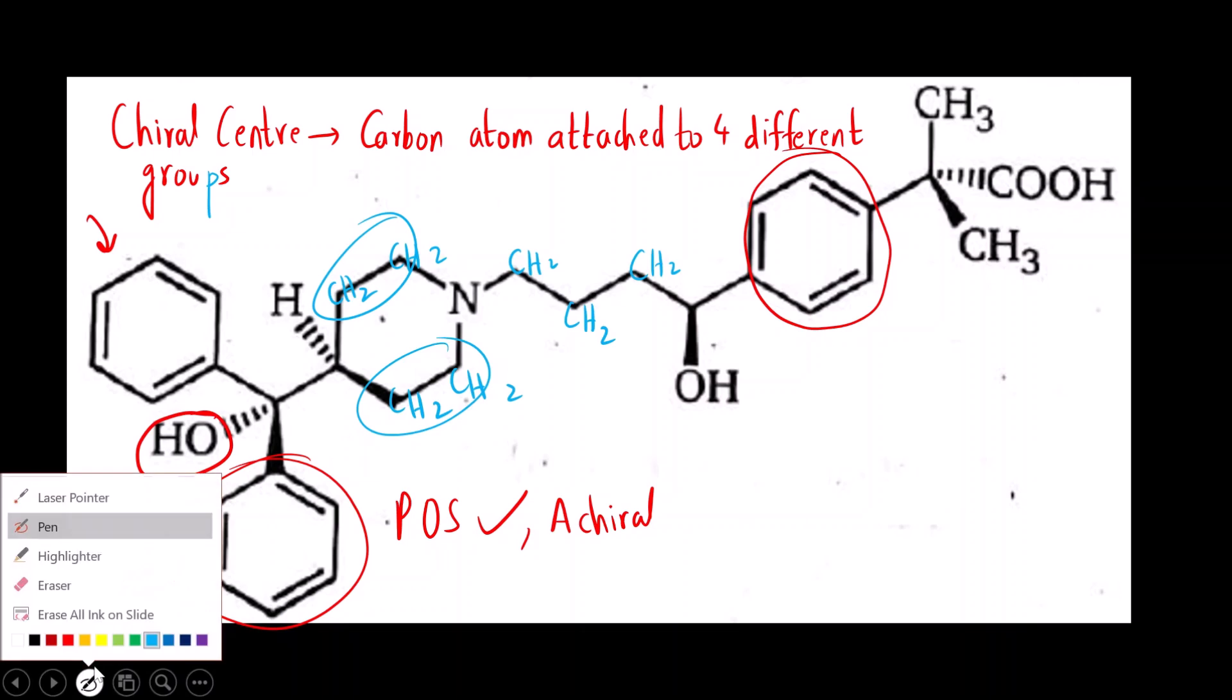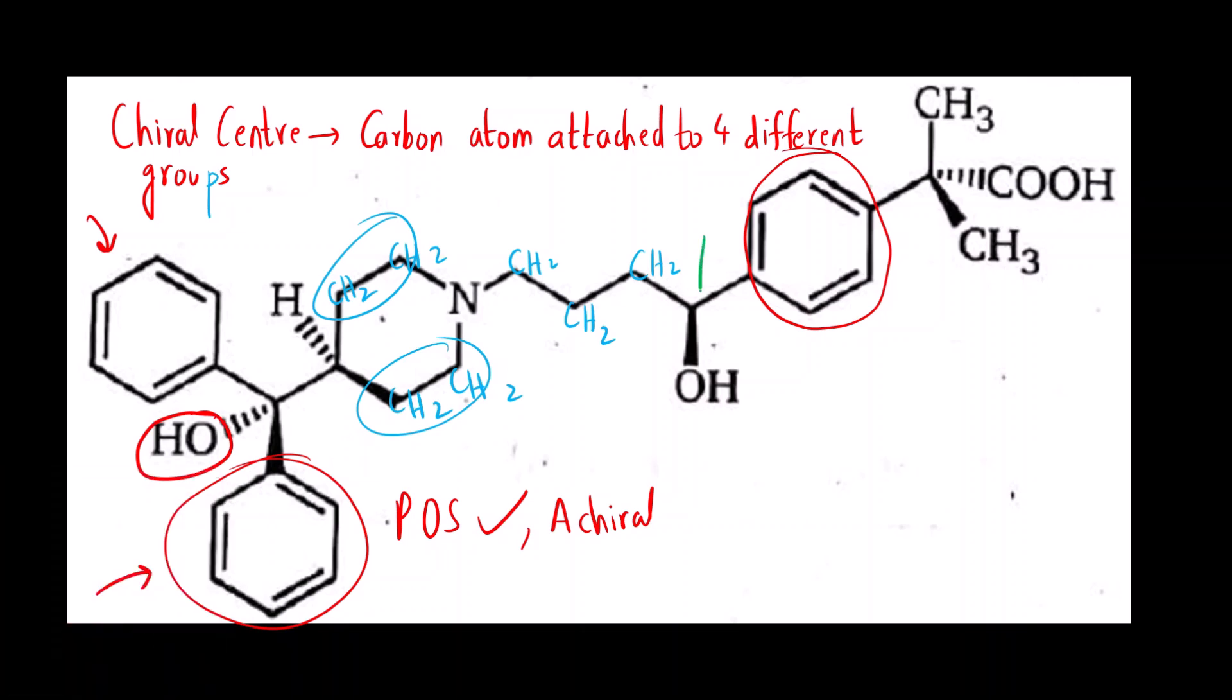Now let us talk about this carbon. Is this chiral? Let us check. There is OH. Here there is CH2. Here there is sp2 hybridized carbon and below the plane there will be hydrogen. So four different groups are present. This is a chiral carbon. This is chiral. sp2 hybridized all the carbons of the benzene ring are achiral.